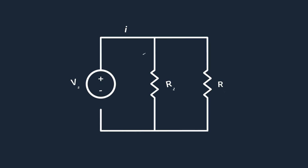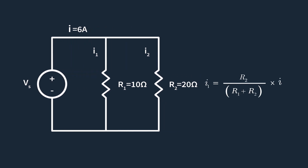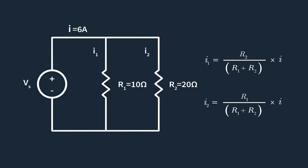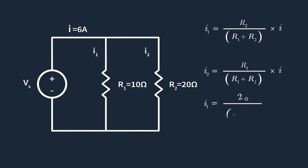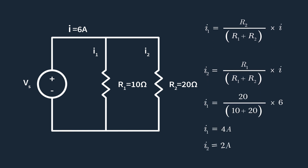The given parallel circuit consists of two resistors: R1 equals 10 ohms and R2 equals 20 ohms. The total current entering the parallel combination is I, which equals 6 amps. Using the current divider formula, I1 equals R2 divided by the sum of R1 and R2, multiplied by the total current. Similarly, I2 equals R1 divided by the sum of R1 and R2, multiplied by the total current. Substituting the values, I1 equals 4 amps and I2 equals 2 amps. You can verify your answer by confirming that the total current equals the sum of the currents through both branches.